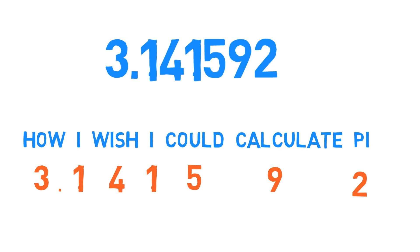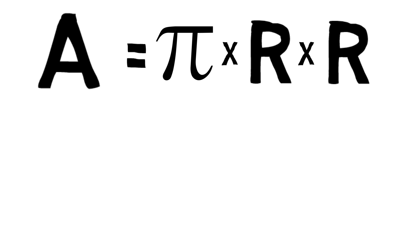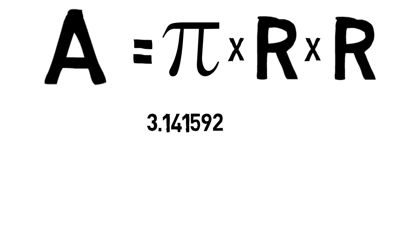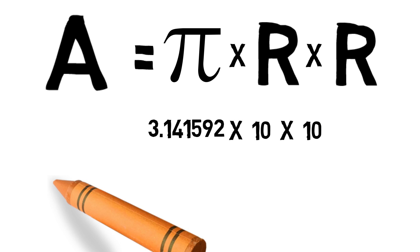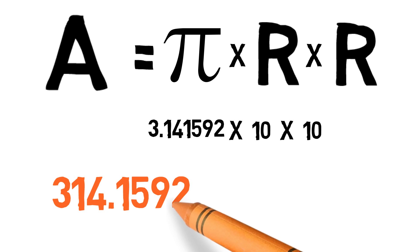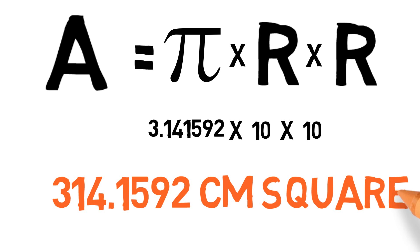Now let's put this formula into use. Here is our first problem: a circle has a radius of 10 cm. What is its area? Let's replace these symbols with their actual values, and this gives us 314.1592 cm², which is our area.